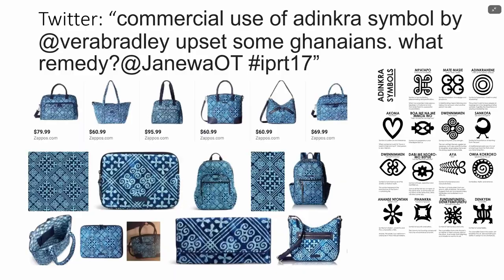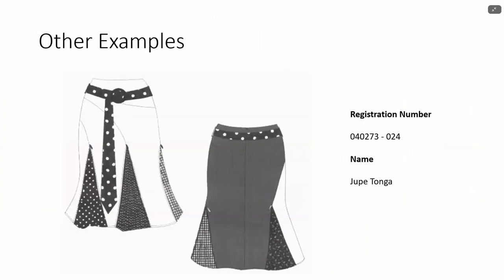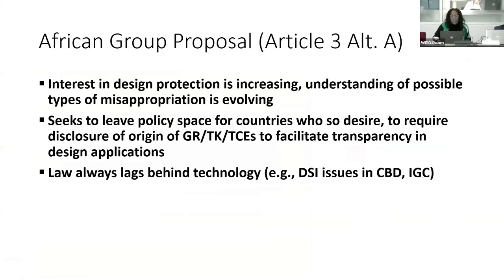This relates more to TK and TCEs, which I think we're pretty much in agreement on, and there are countries that already have requirements for disclosure of source and origin in relation to TK and TCEs. The question that has been coming up is: what about GRs? How do they relate, and why should there be disclosure in a design treaty for genetic resources?